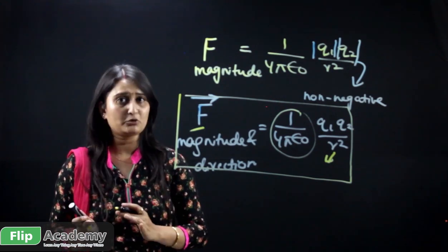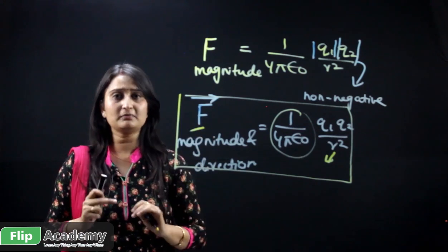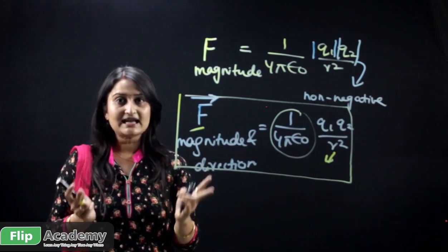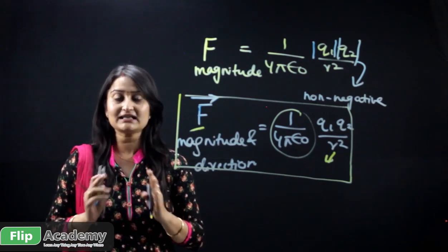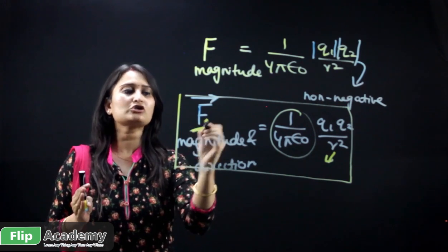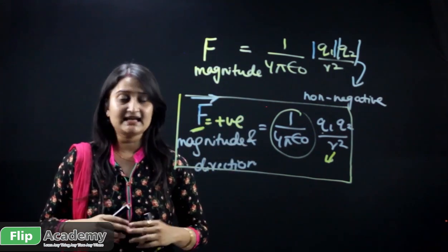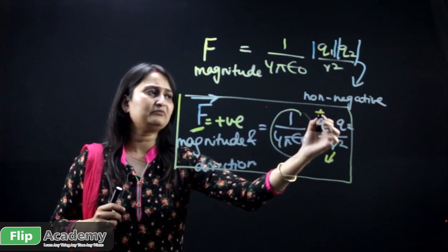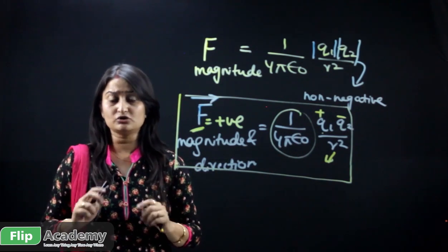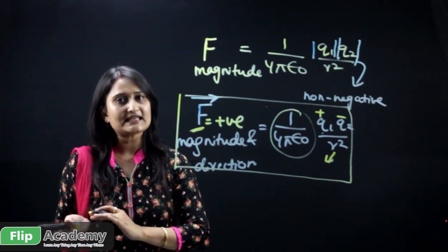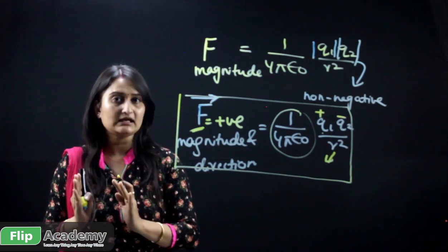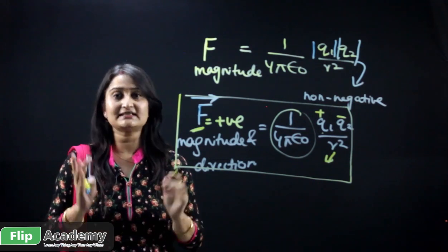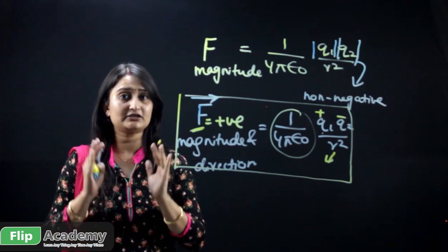The first important point is that Coulomb's law is always taken along a straight line — r should be along the straight line joining the two charges. Second, the charges Q1 and Q2 can be like or unlike: both positive, both negative — no matter what. Force can be positive or negative. If Q1 and Q2 are both positive, force is positive (repulsive). If both are negative, negative times negative gives positive — again repulsive. If unlike charges, the force is negative, representing attraction.